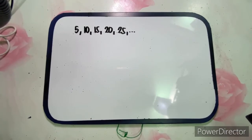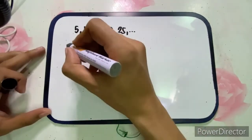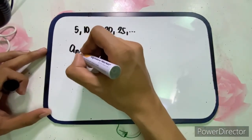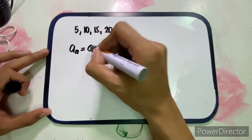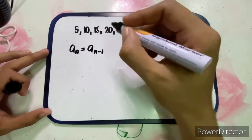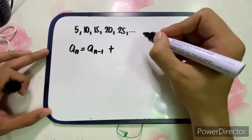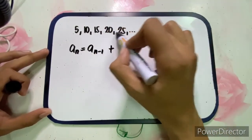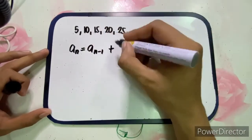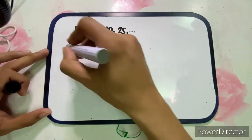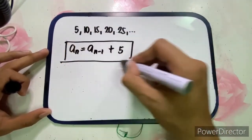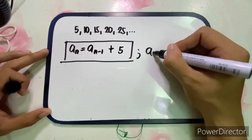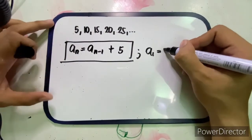For the second arithmetic sequence — 5, 10, 15, 20, 25 — we can write the recursive formula directly. The common difference, or step up, is 5, since 10 minus 5 is 5. So the recursive formula is a sub n equals a sub n minus 1 plus 5, where a sub 1 equals 5.